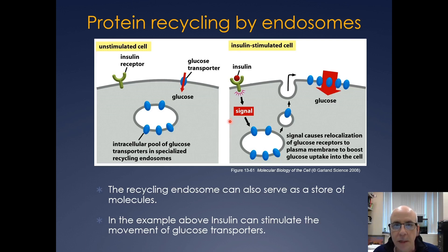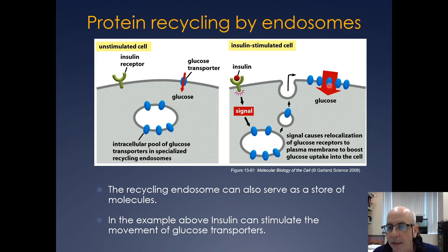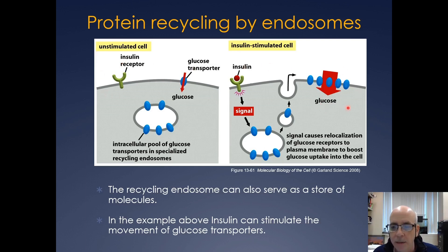You can also get protein recycling by the endosome. Here's your insulin receptor, and you have your glucose transporter. Then all of a sudden, if insulin binds, you get a signaling event, and more glucose transporter is actually brought to the plasma membrane, and then that can uptake more and more glucose. It's pretty simple to understand why this is very important in diabetes.